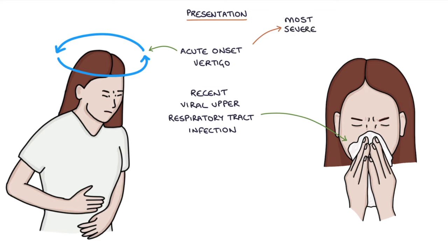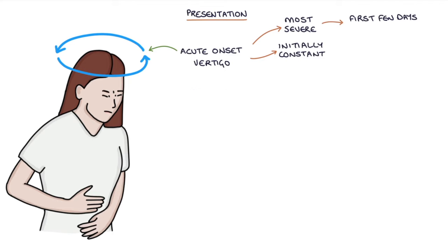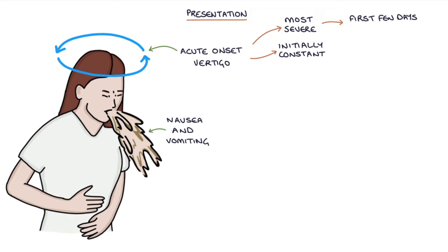Symptoms are most severe for the first few days. Initially vertigo may be constant, after which it's triggered or worsened by head movement. It's often associated with nausea and vomiting, which may be severe, and balance problems.